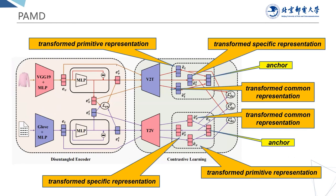In this section, we introduce the contrastive learning strategy. In the disentangled encoder, we force the disentangled representations to contain different aspects of modalities, but we cannot guarantee each representation contains the desired properties. For example, the common representation may not keep the common characteristics across modalities. It is hard to build supervision signals for this decomposition. So in this module, we aim to perform cross-modality alignment over these representations by taking the primitive representations as anchors. We take the visual modality as an example, obtaining transformed representations from the visual primitive, visual modality specific, and modality common representations respectively.